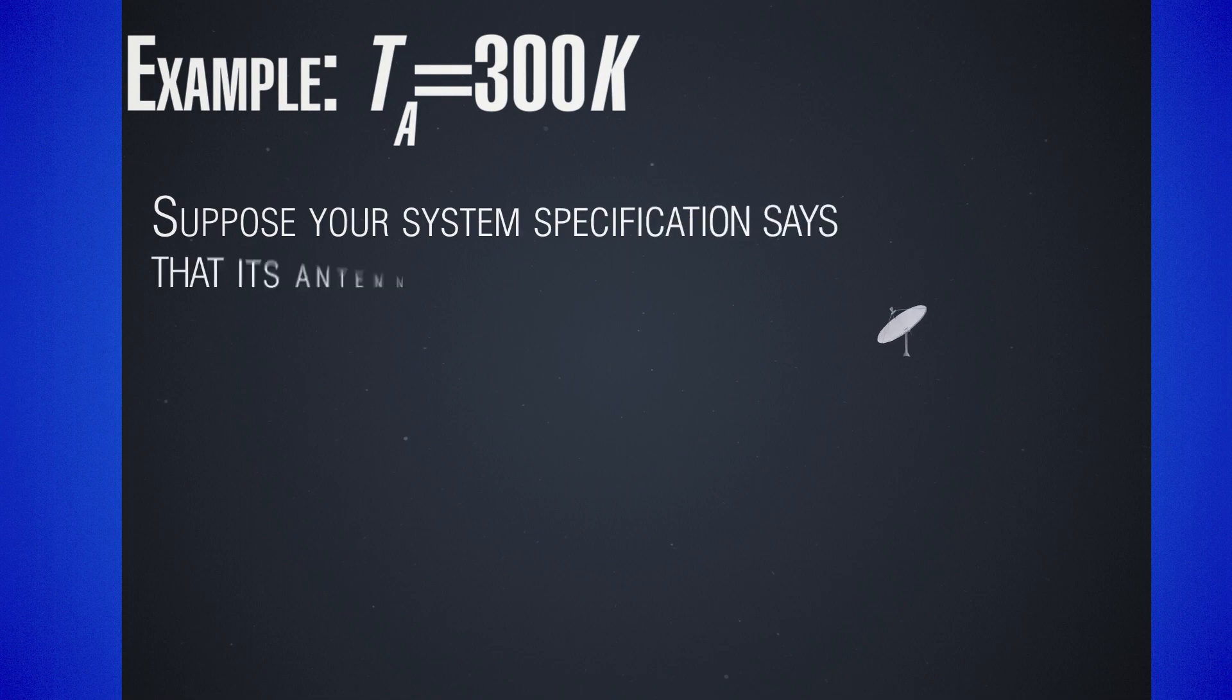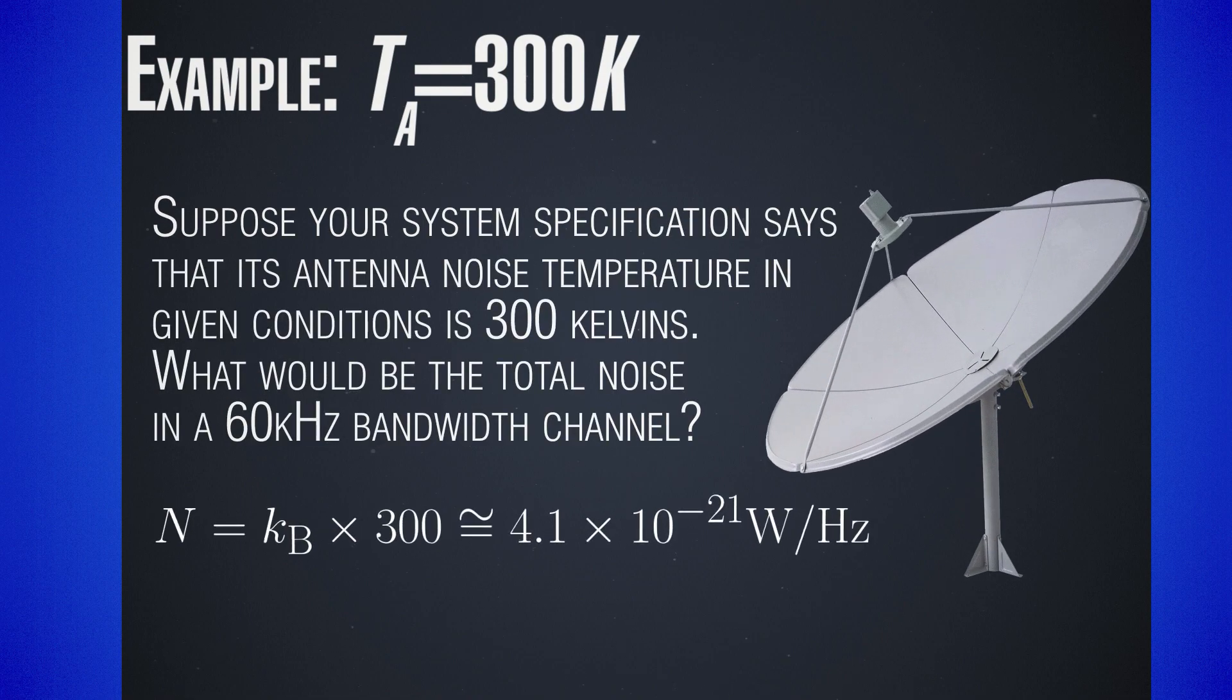Just to give a simple example, suppose you are given antenna noise temperature at 300 kelvins. 273 kelvins correspond to 0 degrees Celsius. So this antenna noise temperature, if translated to physical temperature, would correspond to room temperature. What noise would it give us if we had 60 kilohertz channel? Using our formula for antenna noise per bandwidth and Boltzmann's constant, we get about 10 to the power of minus 21 watts per hertz.